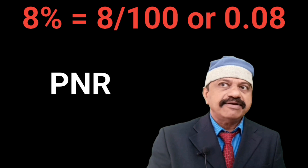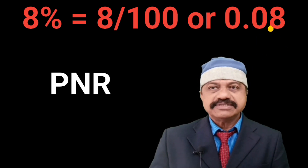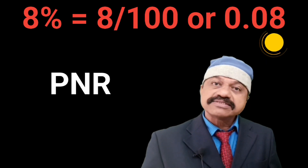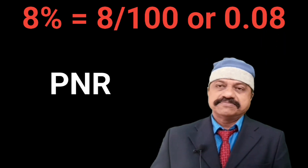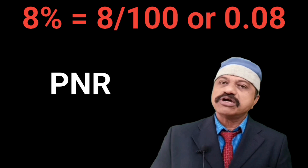Please remember, the formula for the calculation of simple interest or discount is PNR divided by 100. We can avoid the denominator of 100 if we take the rate as a decimal. For example, for 8%, instead of 8 divided by 100, we can take it as 0.08. Then the formula will be PNR only — the denominator of 100 is not required.